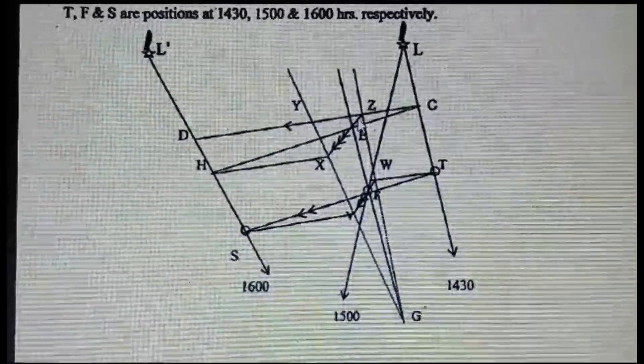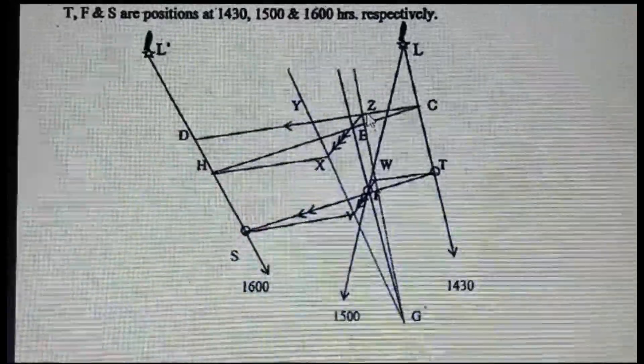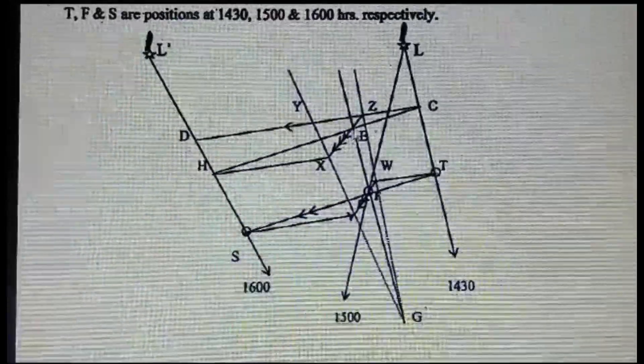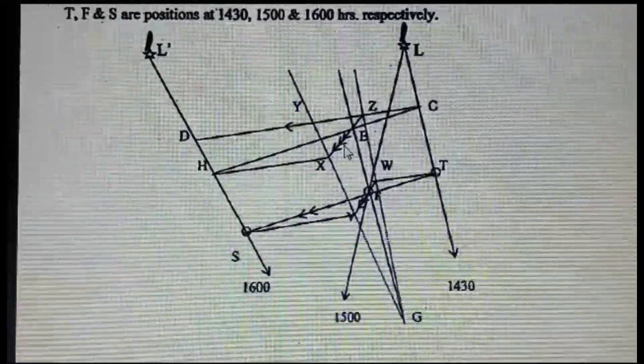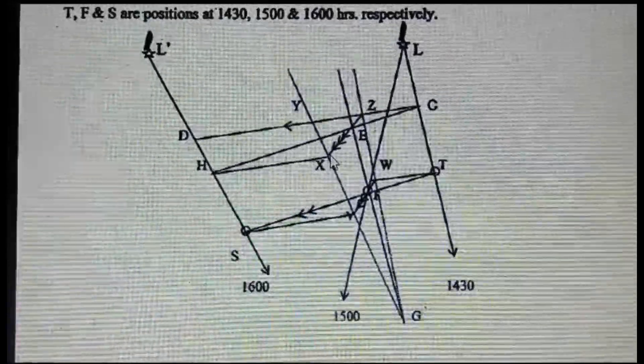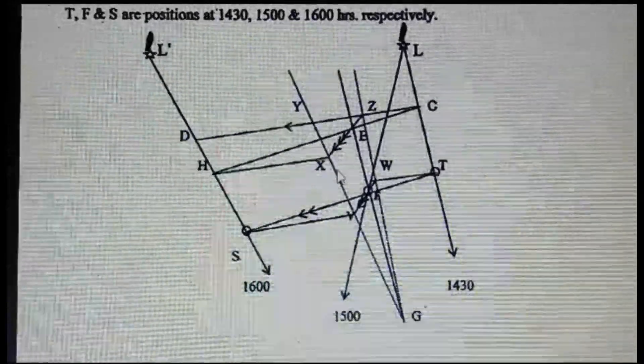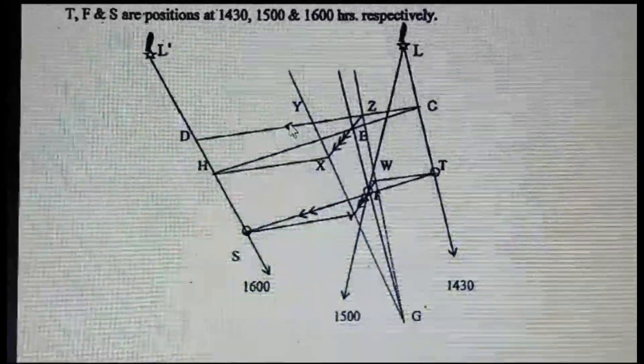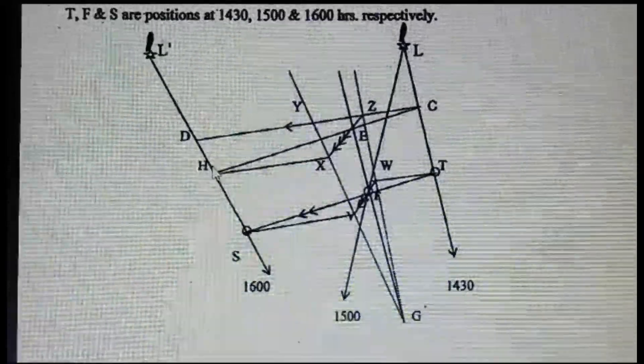Okay, so now since this much you got it. Now from Z draw the direction of the current. Direction of the current, till how much you have to cut? We don't know the rate, so we'll simply draw this till it joins this transferred PL. At the transferred PL we'll simply transfer this CD course from here to here, that is X and H.